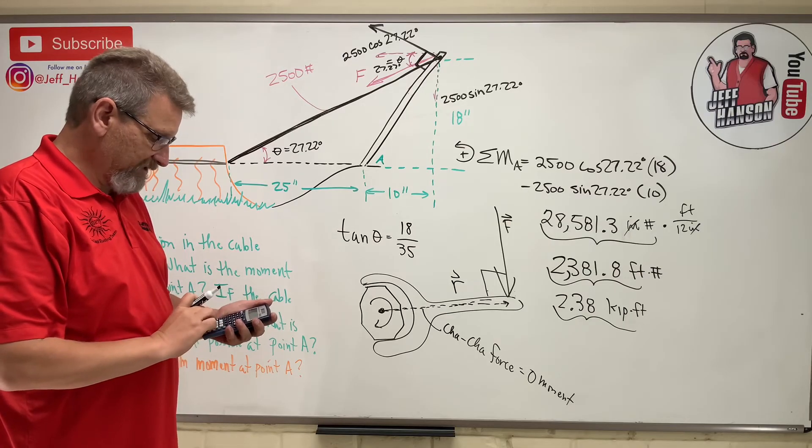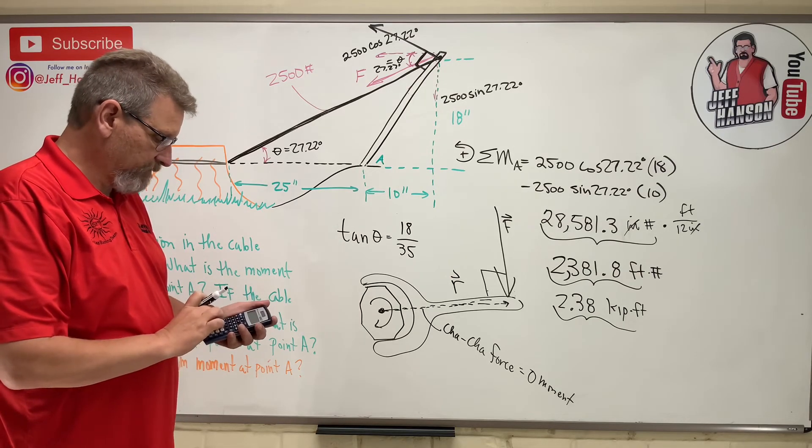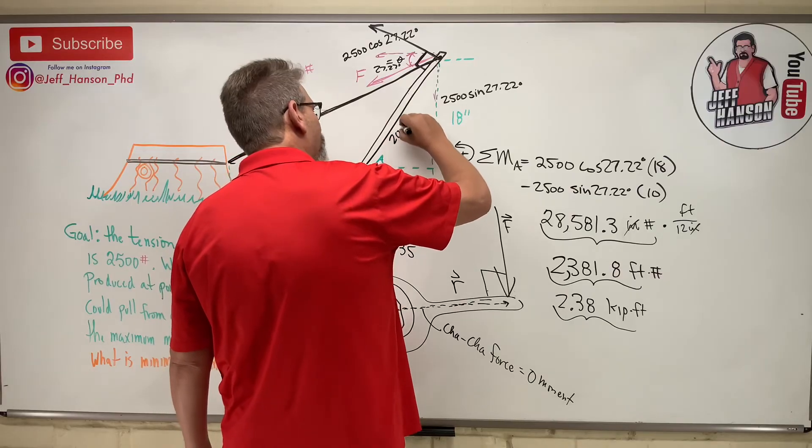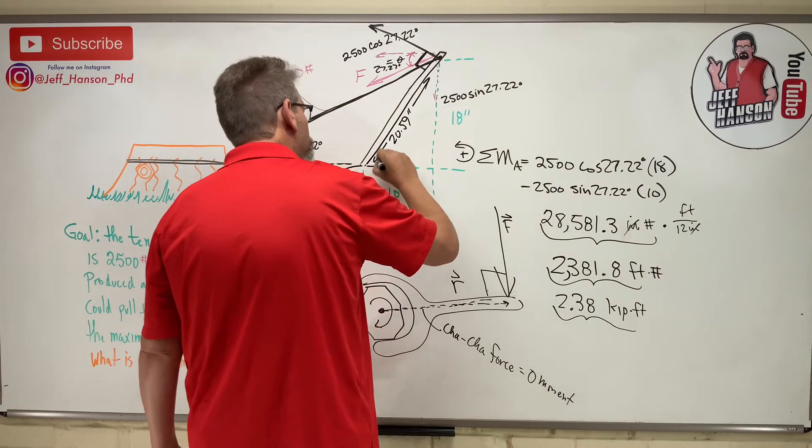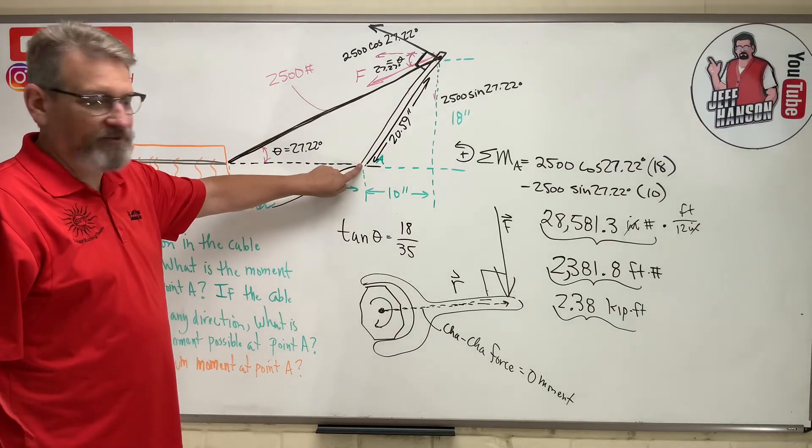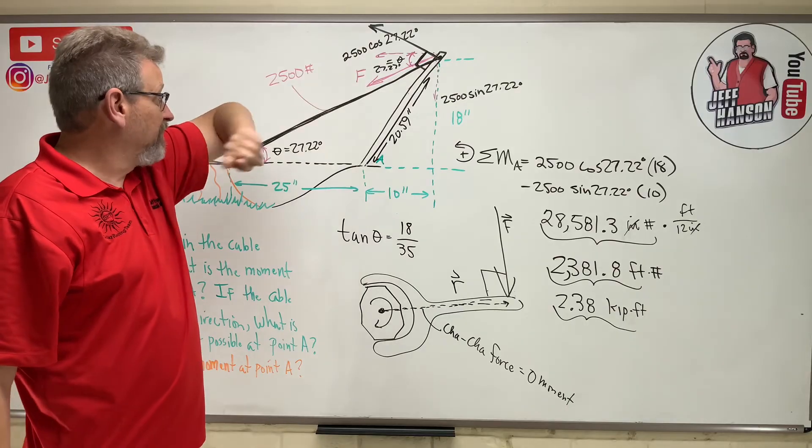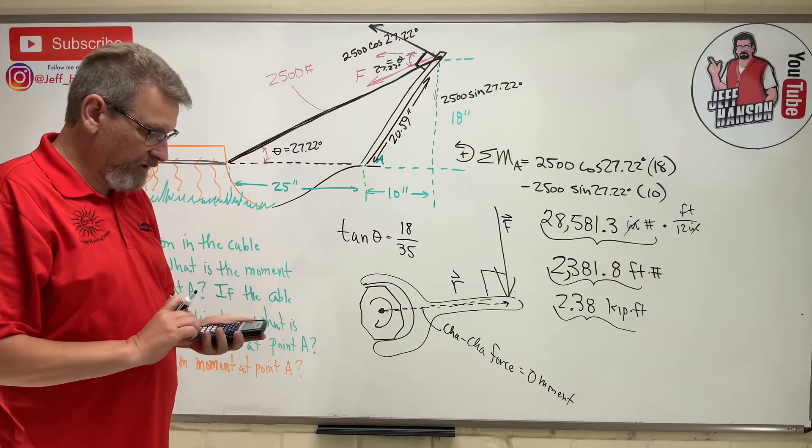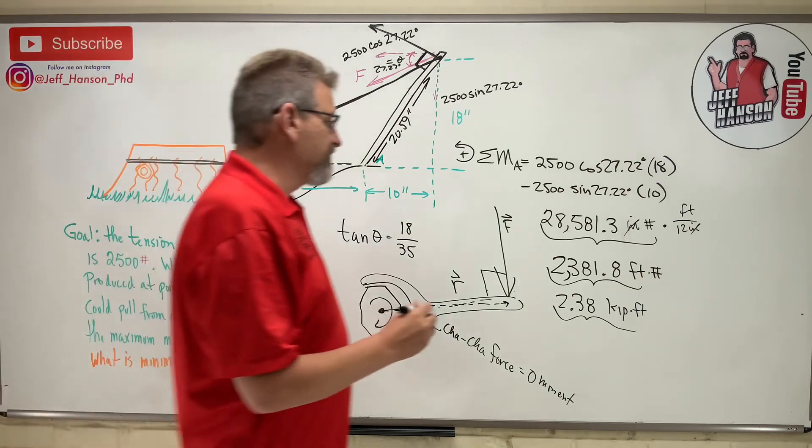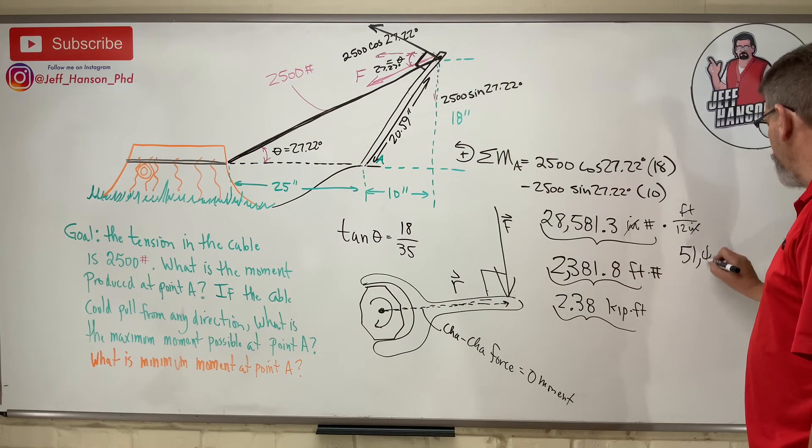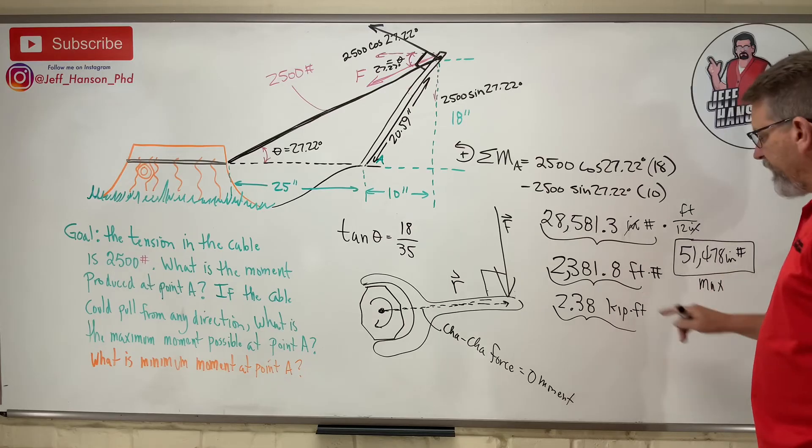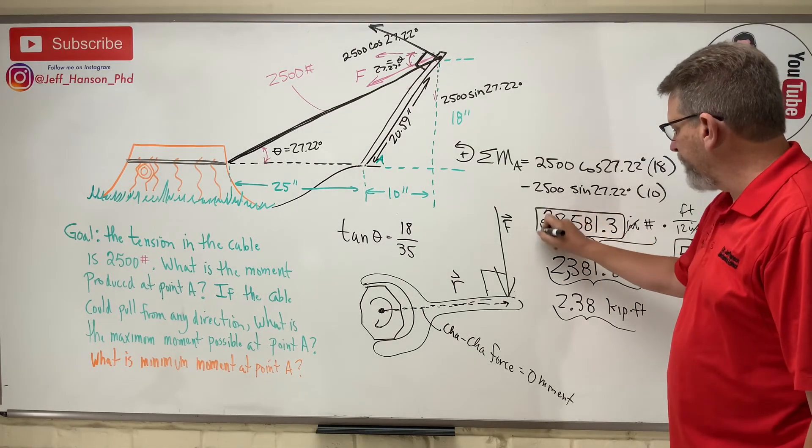Well what is the maximum? Well let me tell you this. What's this? 18 squared plus 10 squared, square root, is 20.59. So the length of this pole is 20.59. Well, about point A it's force times distance. If the force is perpendicular then it's just 2500 times that, done. So times 2500 equals 51,478. So 51,478 inch-pounds. That, my friends, is the max. Here's what it was, 28,000 pounds when it was pulling at an angle, but when I pull it at 90 degrees, 51,000 pounds. So I shouldn't say pounds, I should say pound-inches.